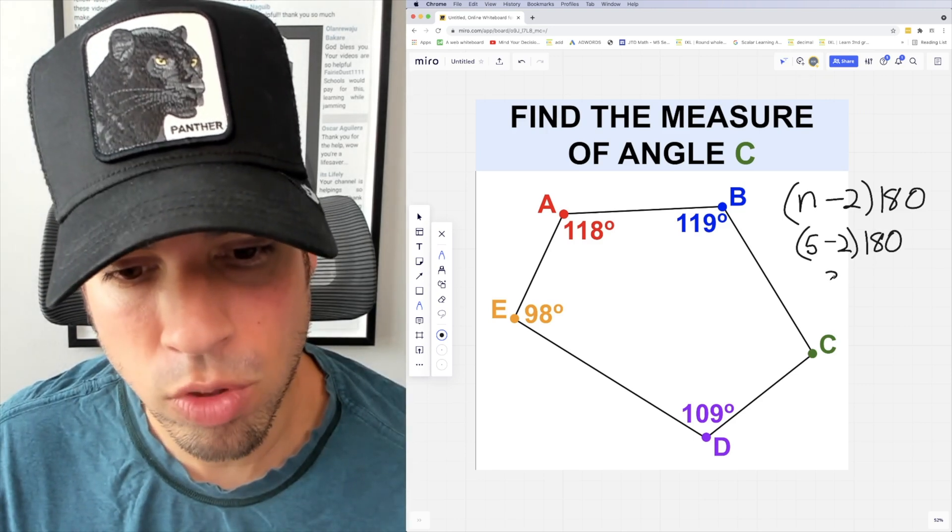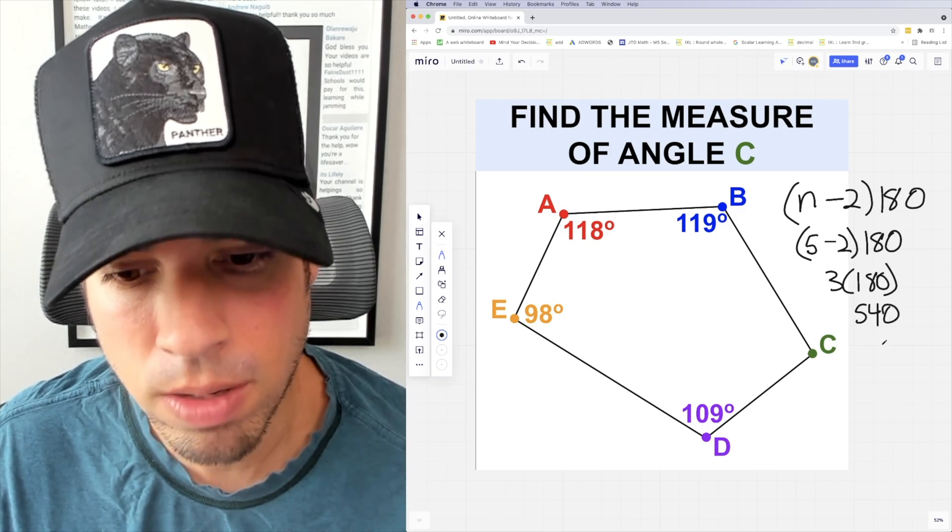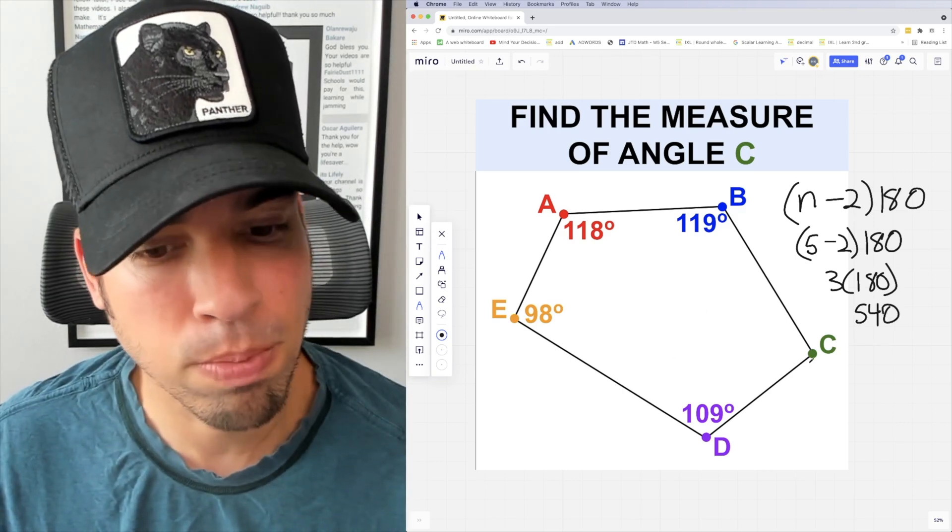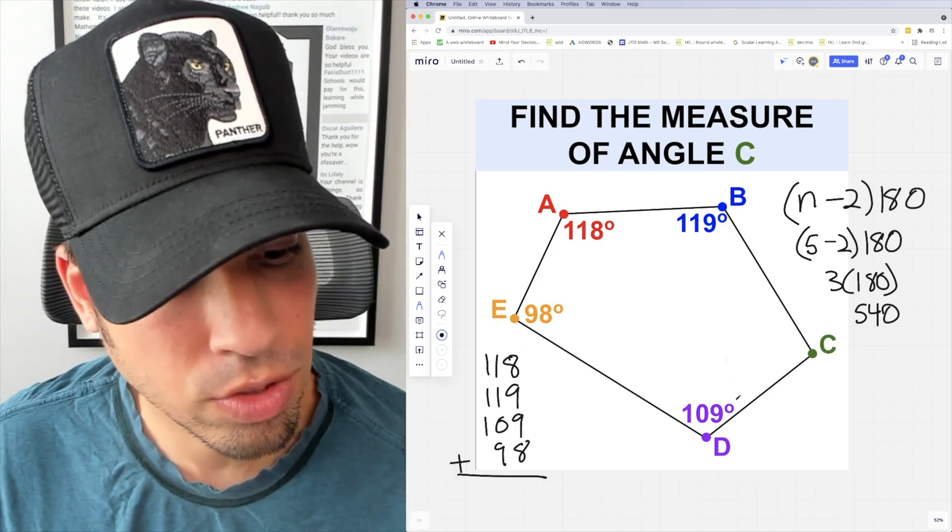5 minus 2 is of course 3, and 3 times 180 gives us 540. That means all of these angles plus angle C have to add up to 540 degrees. First, let's figure out what all of these four angles add up to.